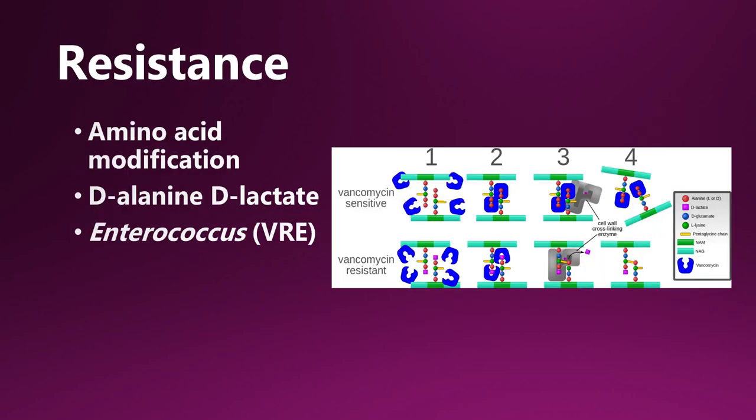The last thing I want to talk about is resistance. Vancomycin has resistance, and it's actually pretty important. The mechanism of resistance is that bacteria switch from D-alanine-D-alanine moiety to D-alanine-D-lactate. You can see that little red circle has gone to a purple square. Because of that conformation change in the amino acids, vancomycin cannot bind. The cell wall cross-linking enzyme is able to come in and cross-link those two parts of the cell wall. One of the big microorganisms that can do that is Enterococcus. VRE literally stands for vancomycin-resistant Enterococcus. Really important to know that for vancomycin.